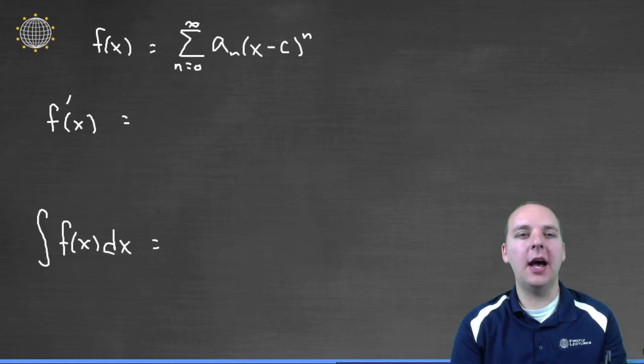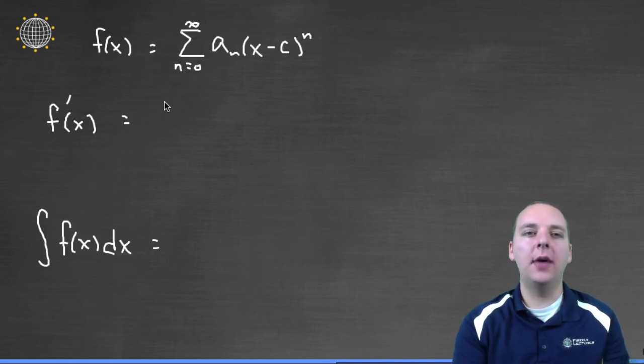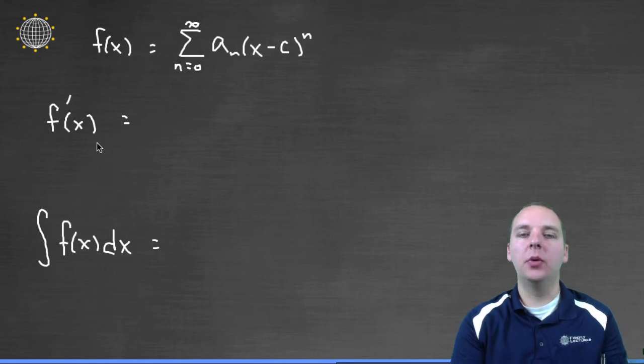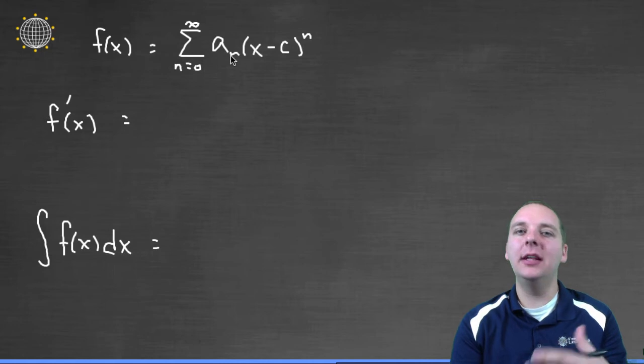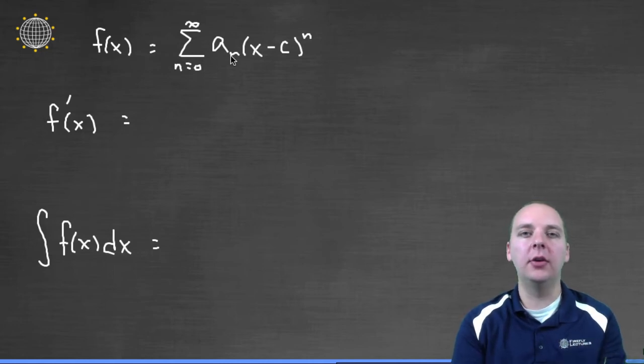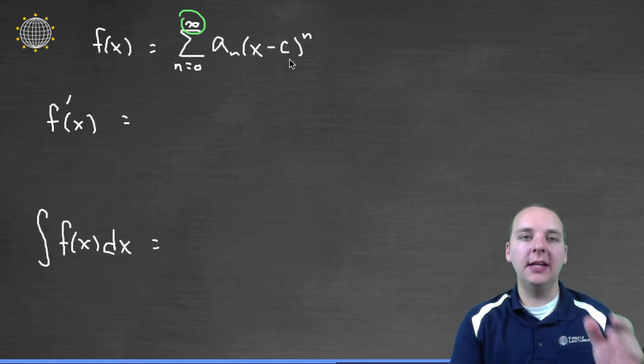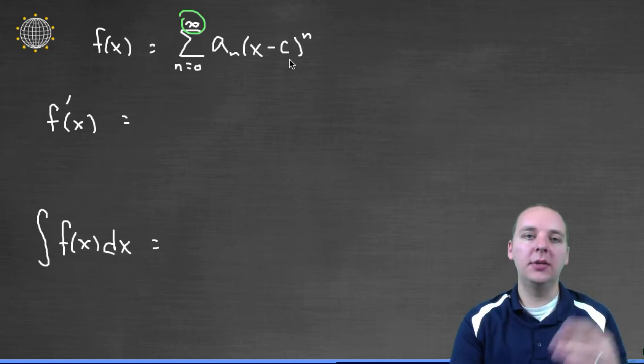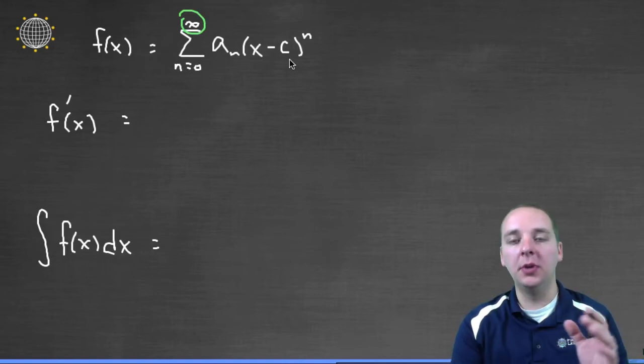Let's think about how you would take a derivative of a power series. Here's what we do. Think of this guy kind of like an infinitely long polynomial. I know it's not really a polynomial because polynomials have a finite degree and this goes to infinity, but think of it as a very long sum. You'd have a sub zero, then a sub one times x minus c to the first, plus a sub two x minus c squared, plus a sub three x minus c cubed, forever.